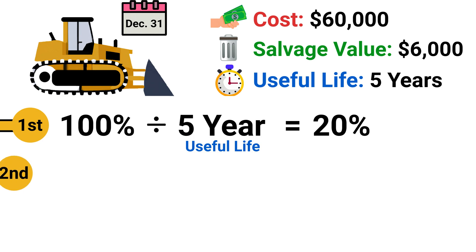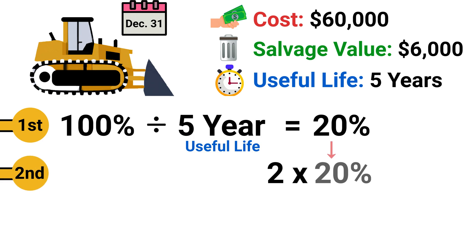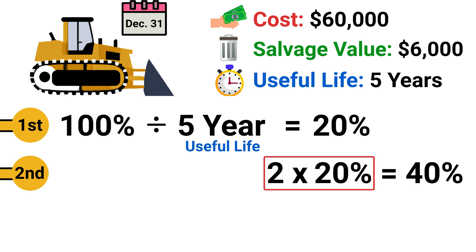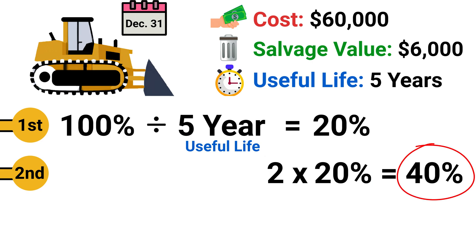Second, we double the asset's straight-line depreciation rate to compute the Double Declining Depreciation Rate. In our example, we double the straight-line rate of 20% per year to get the Double Declining Balance Rate of 40% per year.